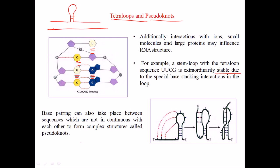Now base pairing can also take place between sequences that are not continuous with each other, as we can see in this picture. So we have a stem loop structure again. In the stem region, there are complementary sequences which can make bonds with themselves to make a stabilized structure. But in the upper loop structure, there are some nucleotide bases which are popping outside. Now these bases can have complementarity in another part of this tetraloop structure, and they start to make bonds with the sequences found in the lower ground structure. This ground structure comes up and pairs with these bases popping outside from the loop, forming structures called pseudoknot structures.